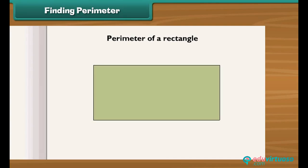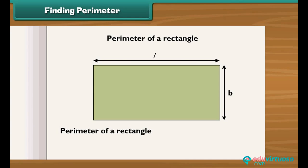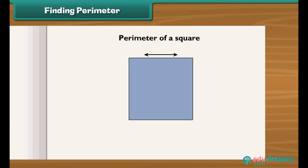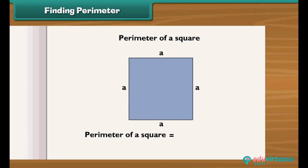Perimeter of a rectangle: if L is the length of a rectangle and B is its breadth, the perimeter equals L plus B plus L plus B, which is equal to 2 into L plus 2 into B. Perimeter of a square: a square is a special rectangle whose length and breadth are equal. If A is the length of one side of a square, then its perimeter equals A plus A plus A plus A, which equals 4 into A.